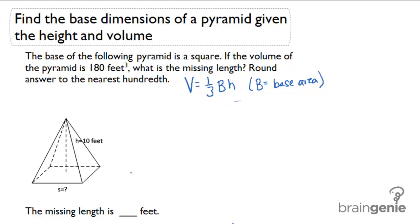So let's take a look at the problem. In the problem we know the height is 10 feet and it looks like we're solving for the missing dimension of the square, which is S.